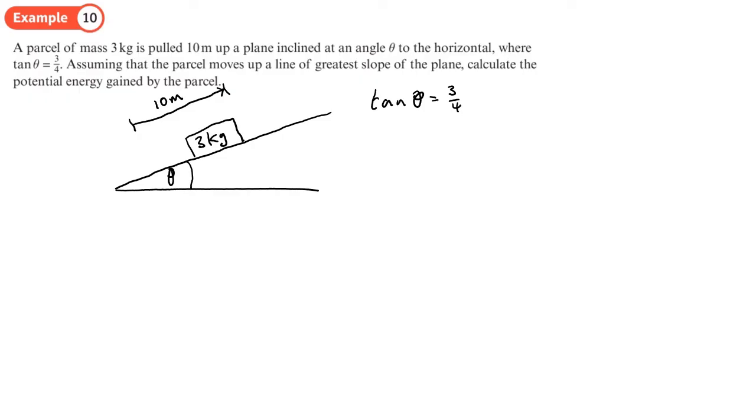We're not going to do the tan inverse to find the angle. Instead, we'll work out sin theta and cos theta. We draw a right-angled triangle with angle theta. Tan is opposite over adjacent, three over four, which means the hypotenuse is five. From that, sin theta is opposite over hypotenuse, which is three-fifths (exact value), and cos theta is adjacent over hypotenuse, which is four-fifths.